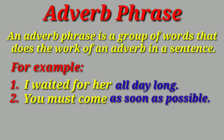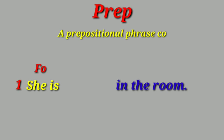Adverb phrase. An adverb phrase is a group of words that does the work of an adverb in a sentence. For example, 'I waited for her all day long' — 'all day long' is the adverb phrase. 'You must come as soon as possible' — 'as soon as possible' is the adverb phrase. A phrase can do the work of an adverb, and thus can be called an adverb phrase.